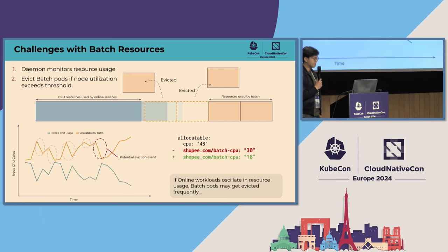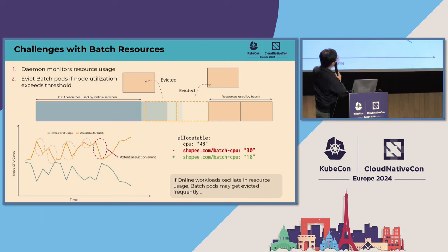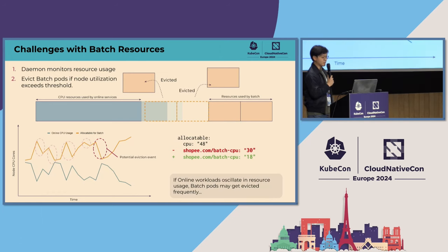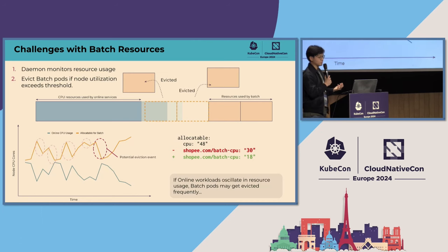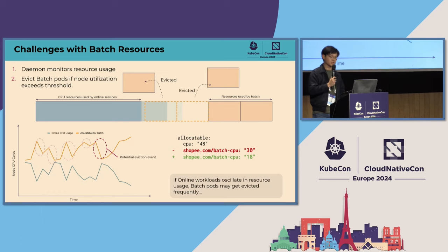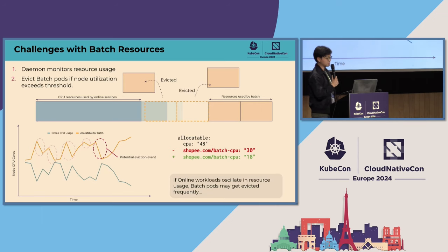Since these resources are ephemeral, they can be reclaimed by the online services at any point in time. The online services utilization represented in blue could actually increase further, which results in the corresponding batch CPU resource decreasing. This might result in the batch workloads being throttled for a really long time if the utilization of the online services persists, causing batch workloads to fail to make forward progress and potentially hang indefinitely. So what we need to do is eventually evict these batch workloads from the node so that we can run them on another node which has more idle resources available instead.